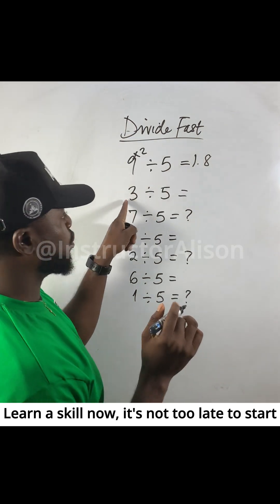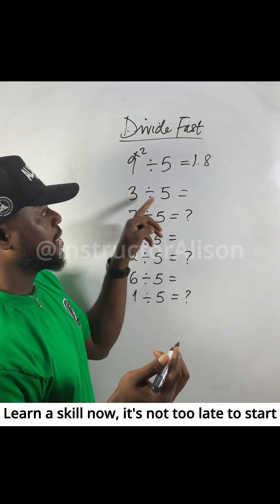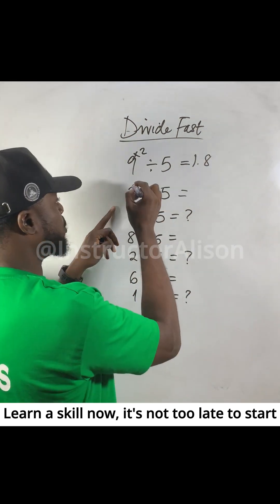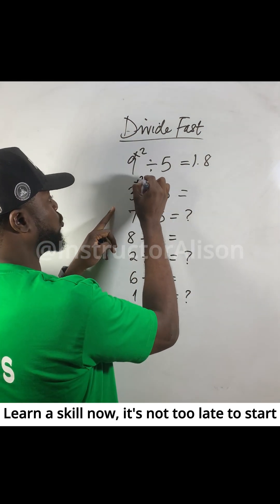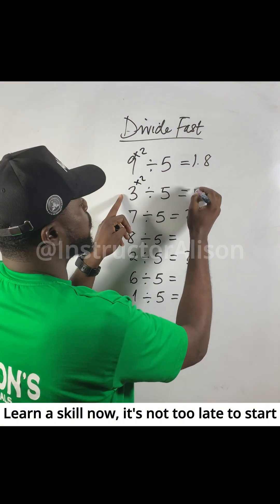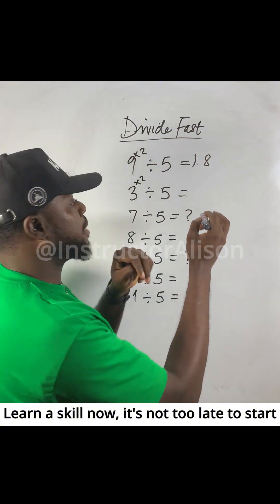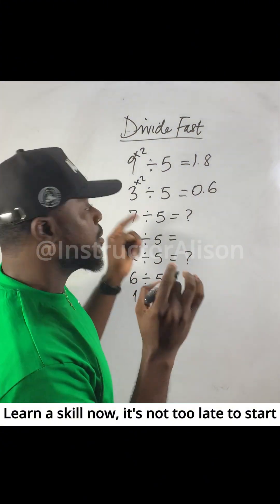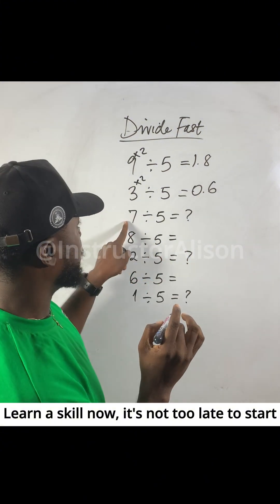Now for a small number divided by 5, do the same thing — multiply by 2. For example, 3 times 2 gives you 6, but this time you write the answer as 0.6.